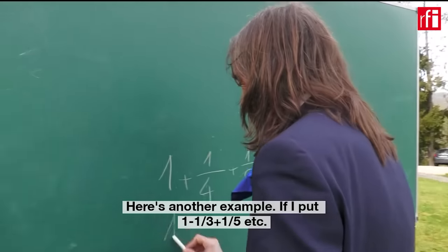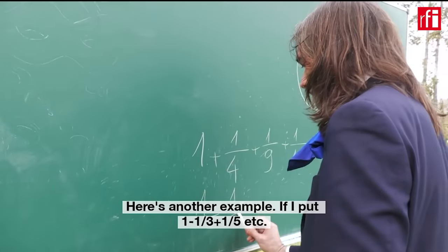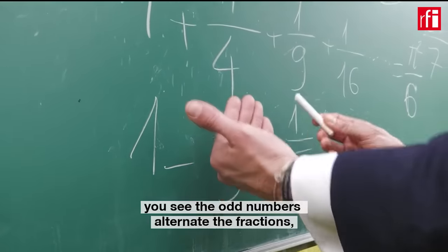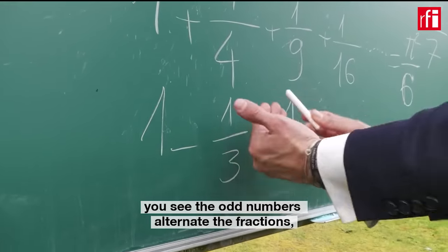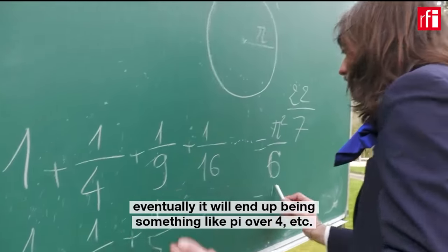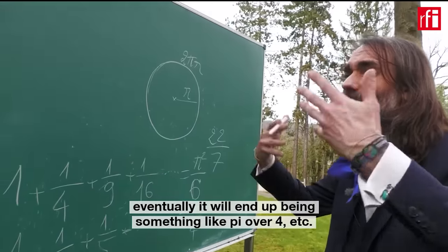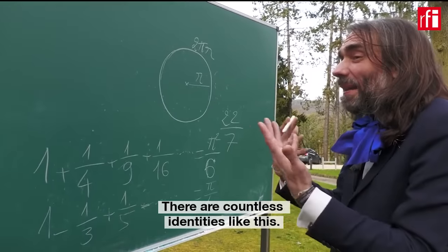Here's another example. If I put 1 minus 1 third plus 1 fifth, et cetera, you see the odd numbers, I alternate the fractions, eventually it will end up being something like π over 4. There are countless identities like this.